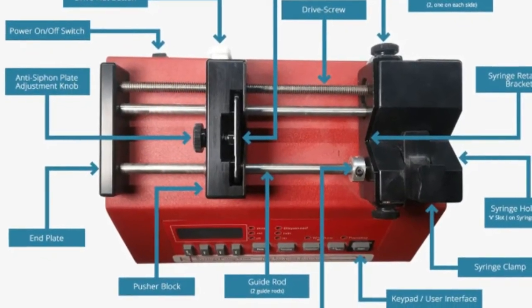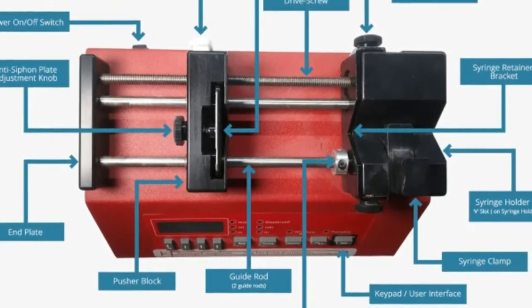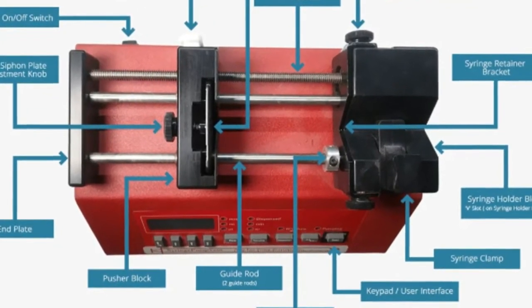The fourth component is the guide rod. Guide rods prevent the pusher block from skewing under mechanical load and then causing a mechanical lockup on the lead screw.